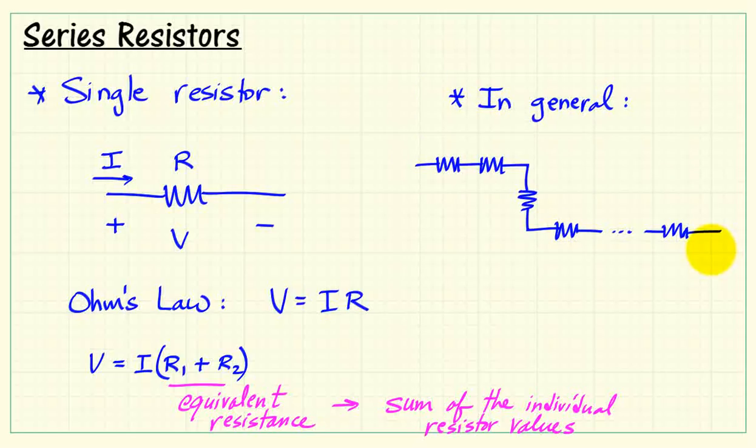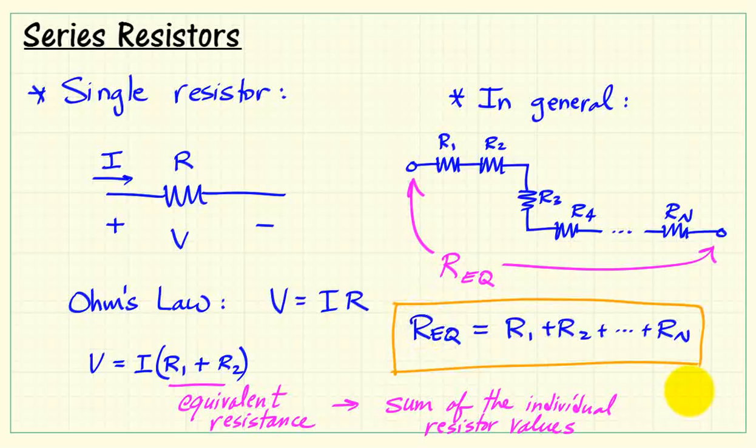So in general, if we had N resistors all connected in series, and the way you lay them out on your page doesn't really matter, the key thing is does the current pass through each resistor? Then we see that the sum of the resistances is the equivalent resistance.